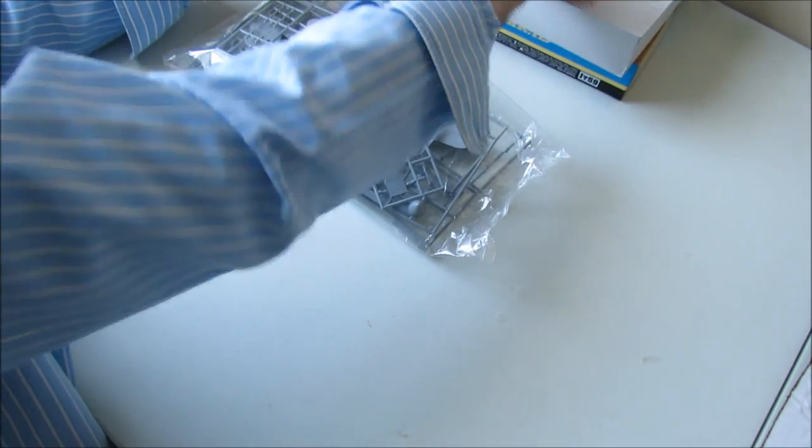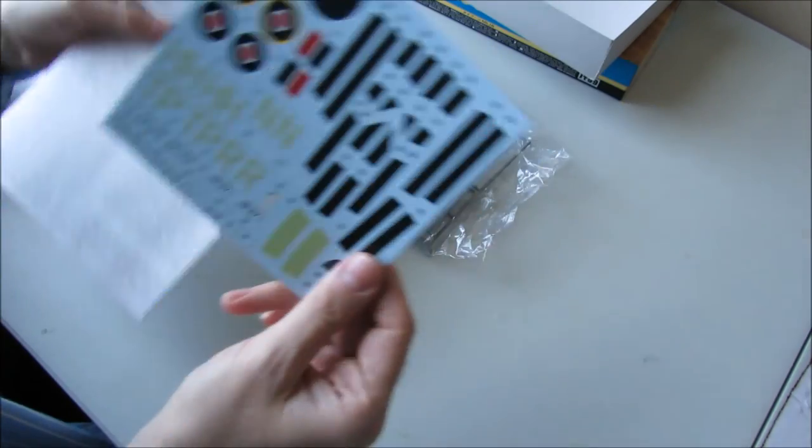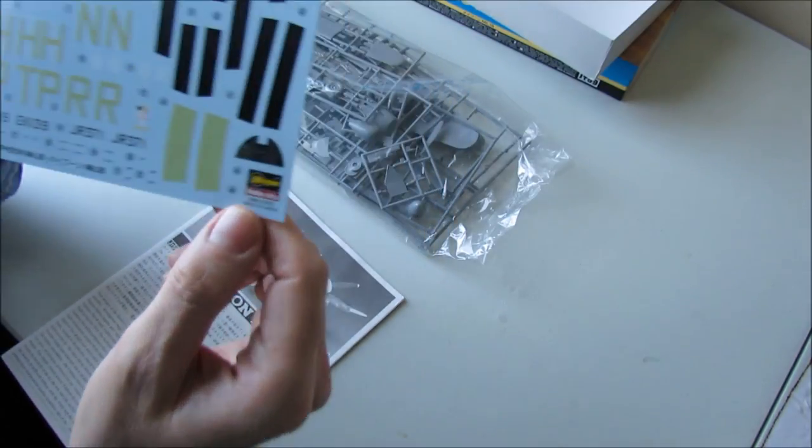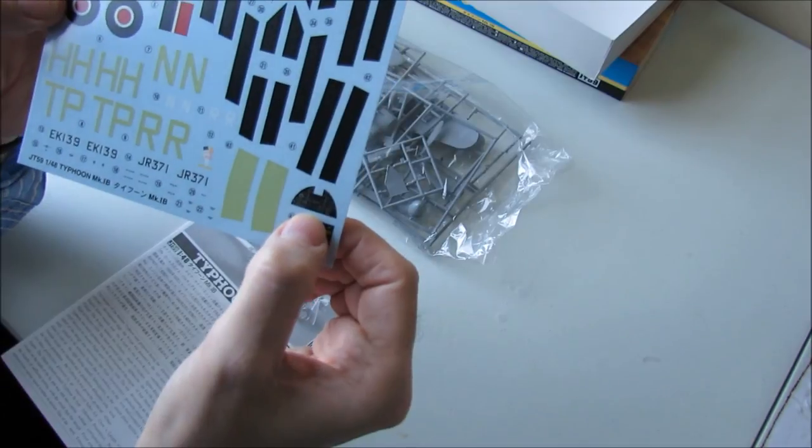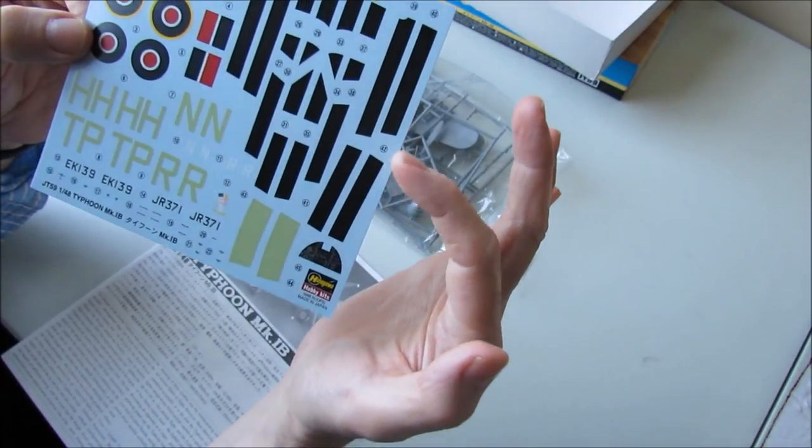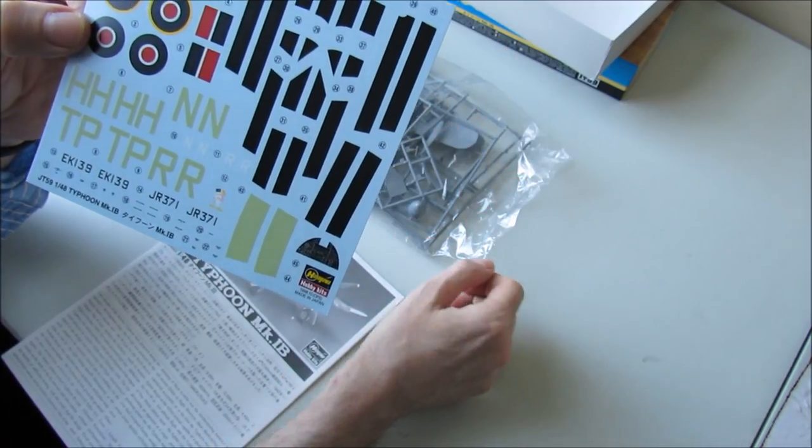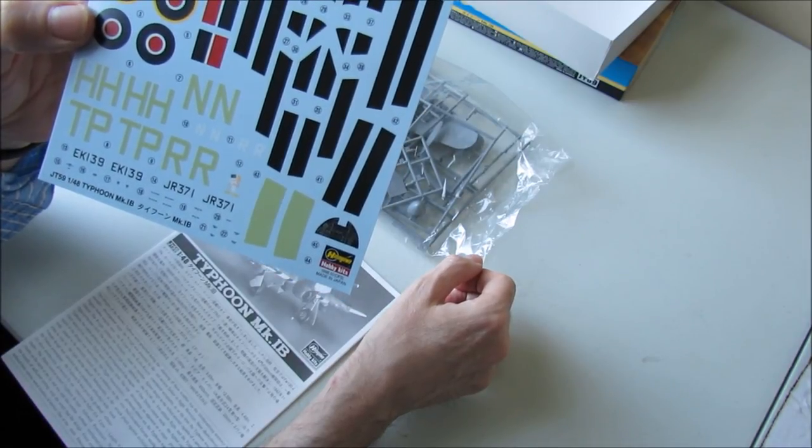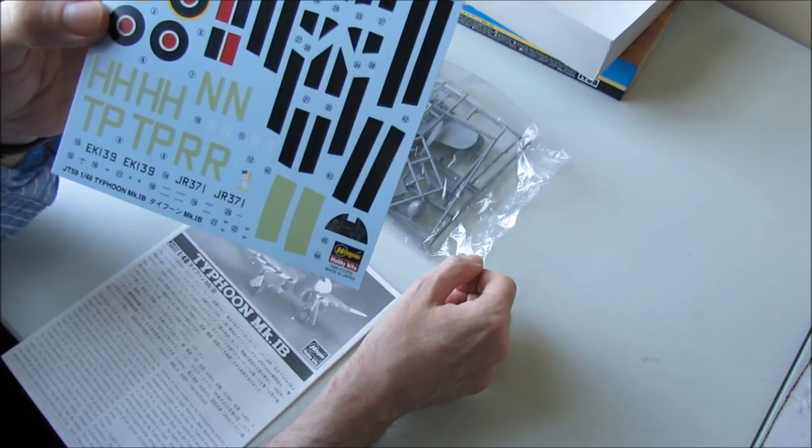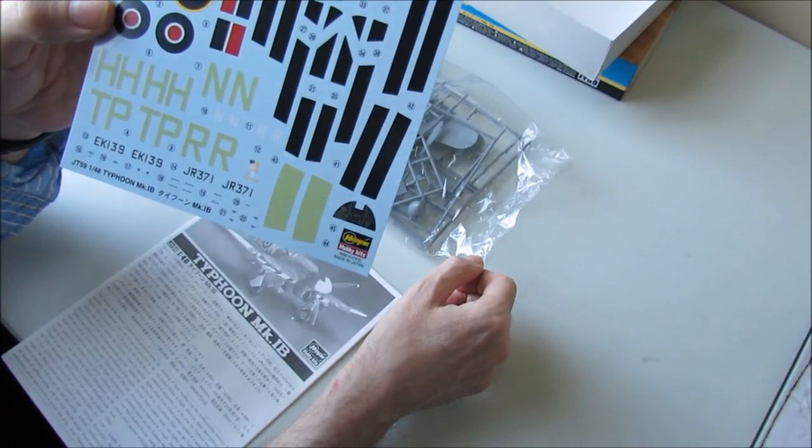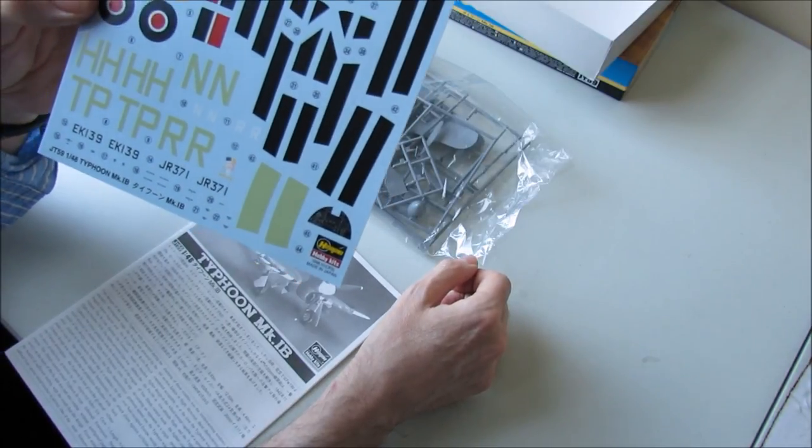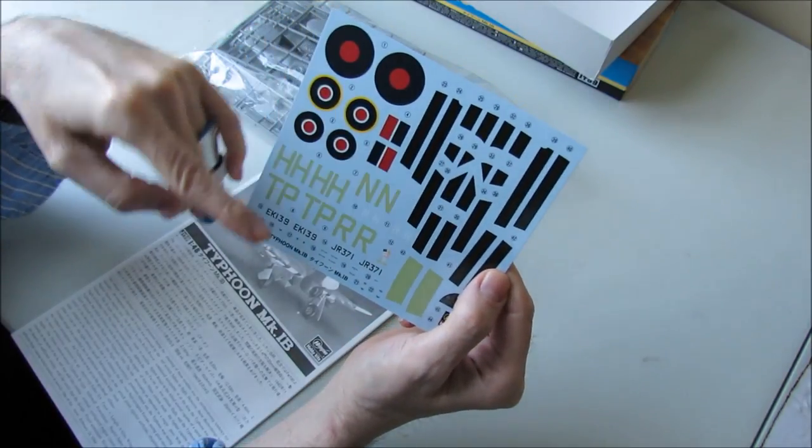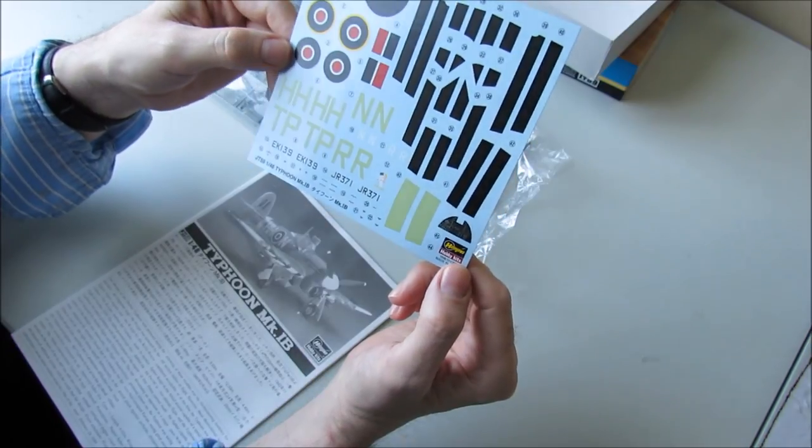I'm going to start with the instructions and the decals. So here we go, there's the decals. Two squadron types that we can do. There's also a decal for the instrument panel. These are decals for the stripes that go on the underside of the wings. That was so that ground crew, people on the ground could recognize that it was a British fighter typhoon, not mix it up with maybe the Focke-Wulf 190. And it's got common roundels for both of those squadron markings.